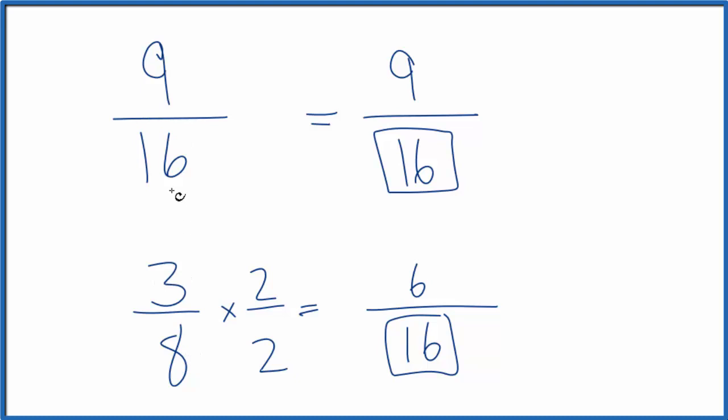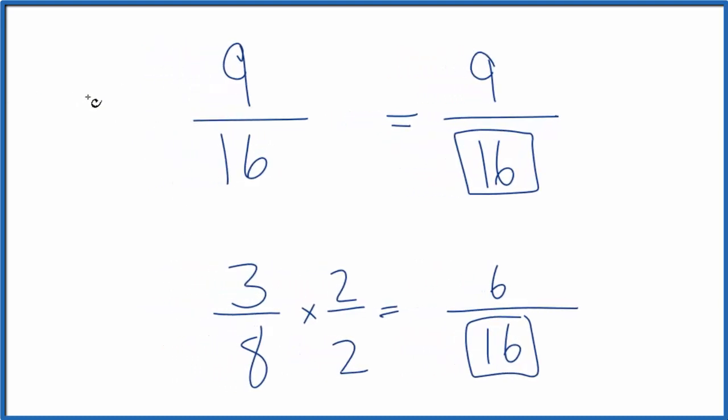We could also write the decimals. 9 divided by 16, I'm going to round that to three decimal places. And then 3 divided by 8.